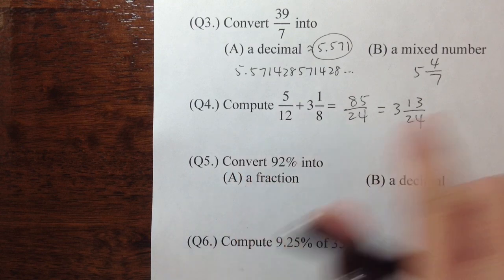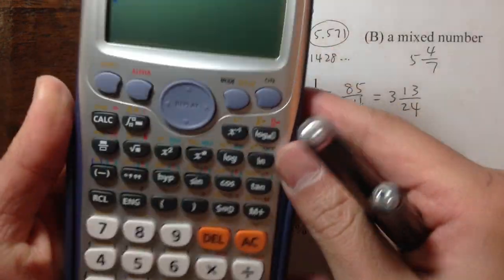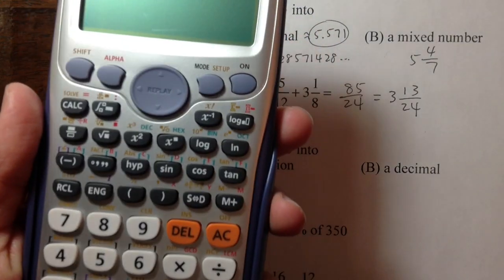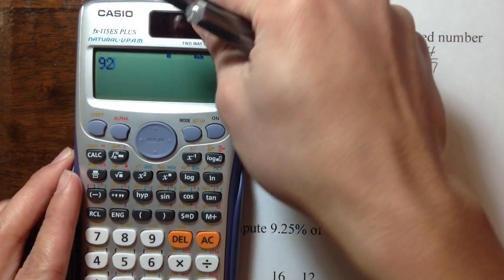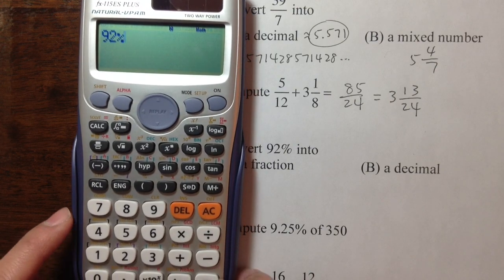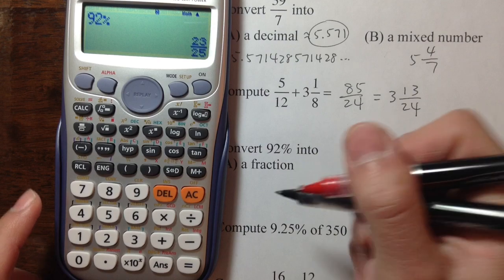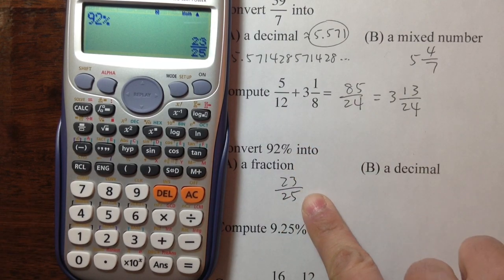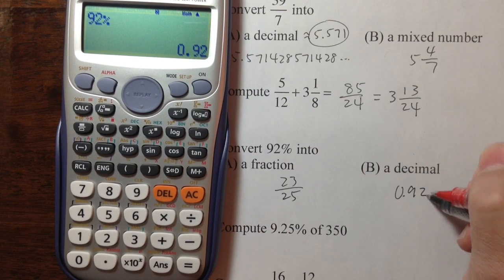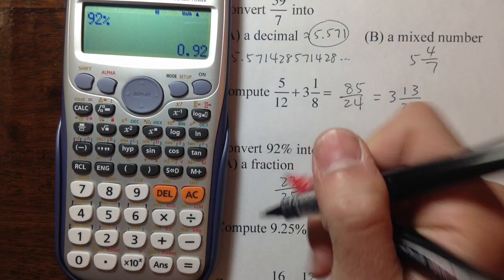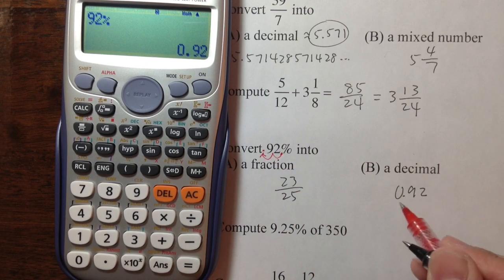Next, we are going to deal with some percentages. I need to convert 92% into a fraction first. So hit 92, and the percentage symbol is right here — it's in orange, so we need to hit shift first, then percentage. To get a fraction, just hit equal. The calculator changed 92% into 23 over 25. This is already the simplest form. And if you want a decimal, just press S to D — we get 0.92. If you move the decimal point twice to the left from 92, you get 0.92 as a decimal.